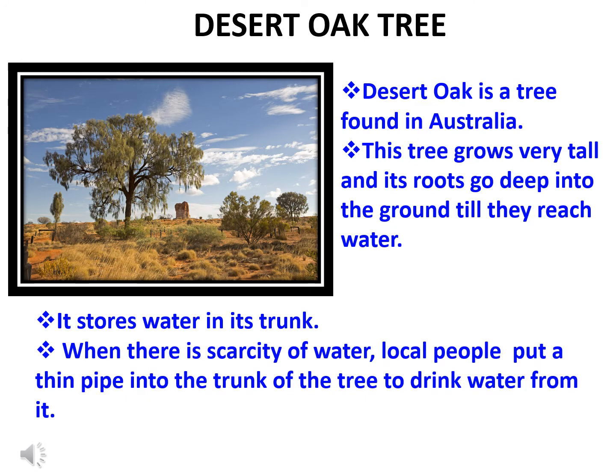Now let us learn about a special tree, the Desert Oak tree. This tree is found in Australia. The Desert Oak tree grows very tall and its roots grow deep into the ground until they reach the water. This tree stores water in its trunk. When there is scarcity of water, local people put a thin pipe into the trunk of the tree to drink water from it.